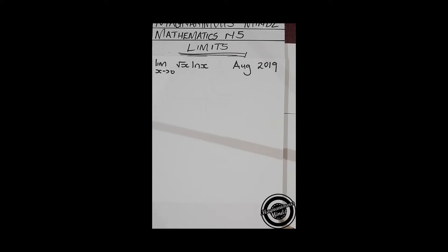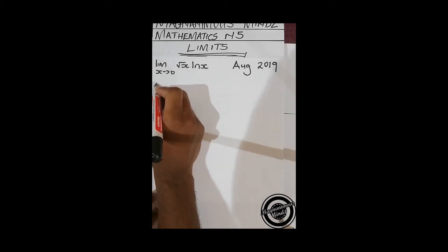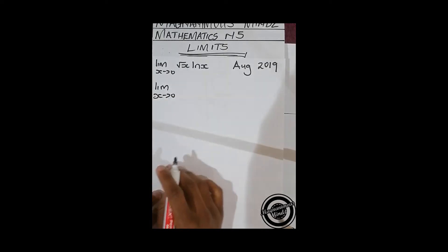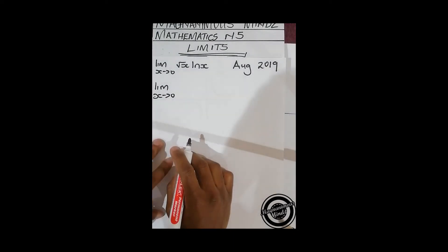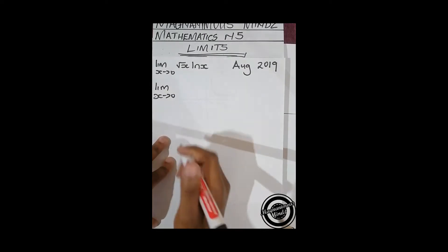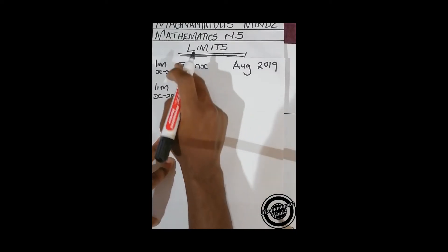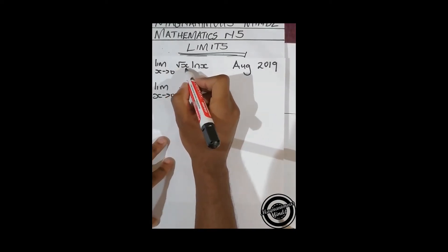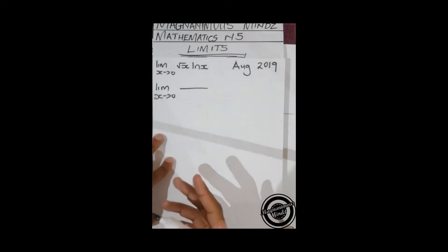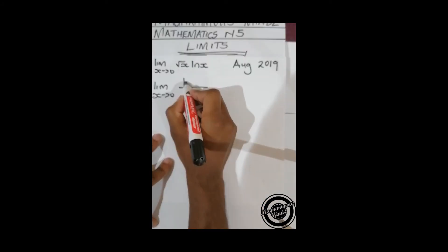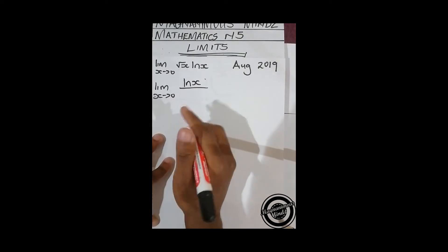Maybe that could help. Let's try it out and see what happens. We'll do lim x approaching zero and make a fraction by taking this below. We know that square root x is x to the power 1/2, so if we take it underneath it's going to be x to the power negative 1/2.